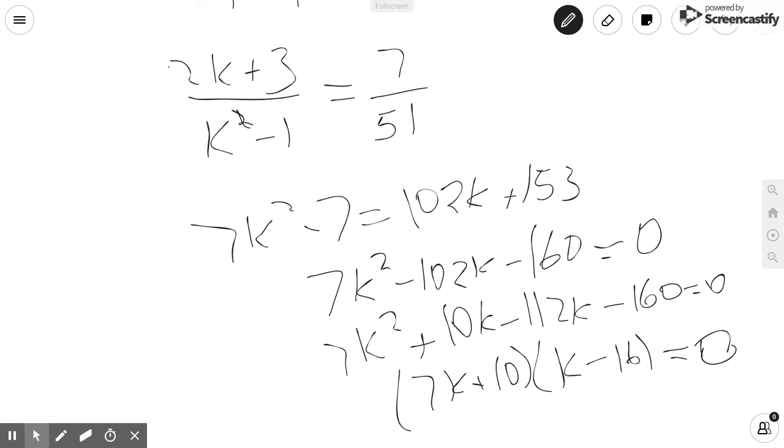And from here, we can tell that k would be equal to negative 10 over 7 or 16. However, a base cannot be equal to a fraction, let alone a negative number. So we know that k must be equal to 16.